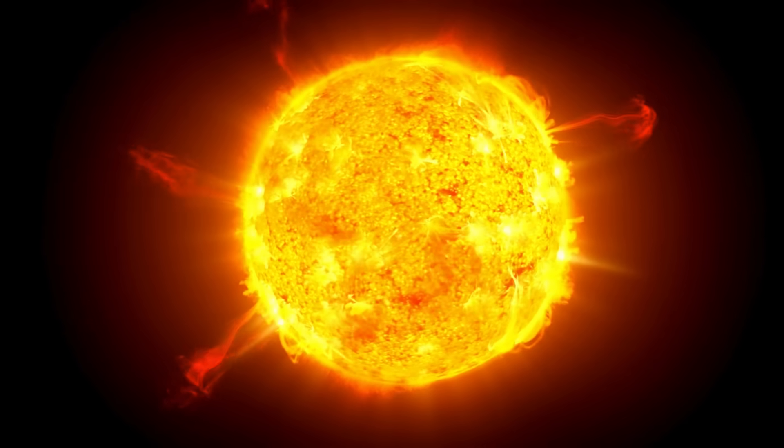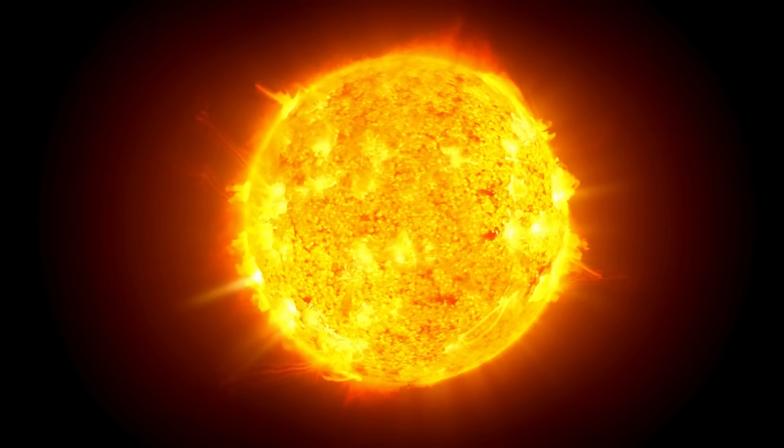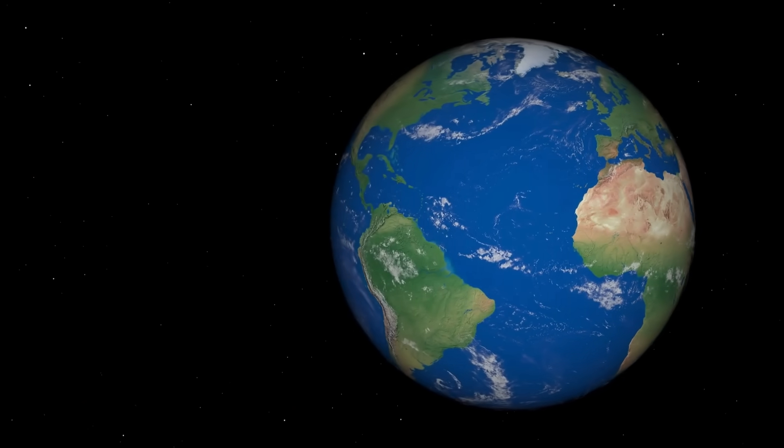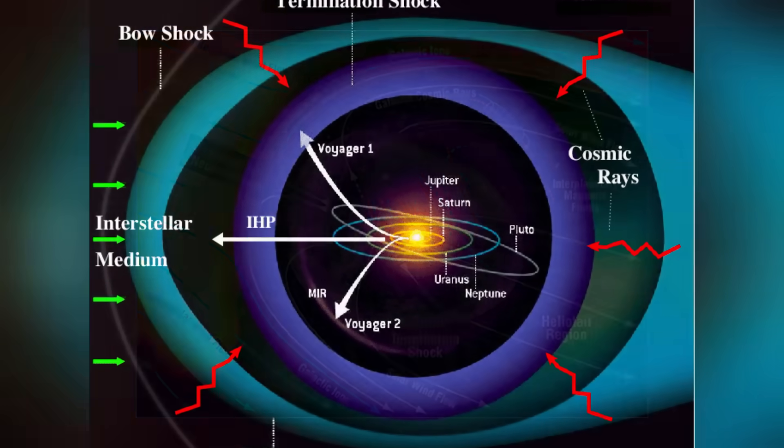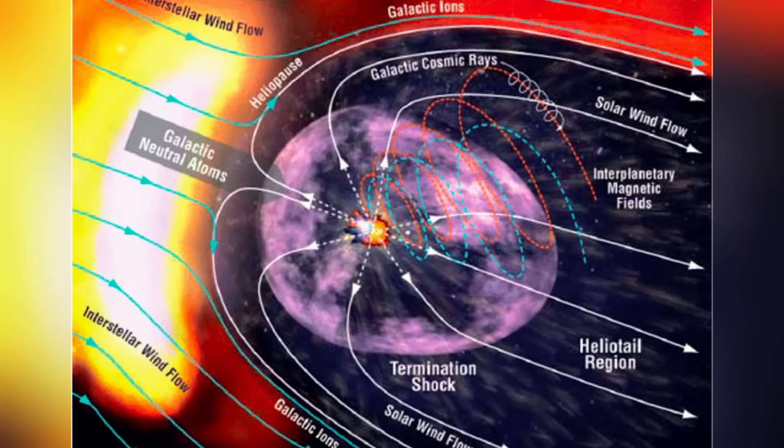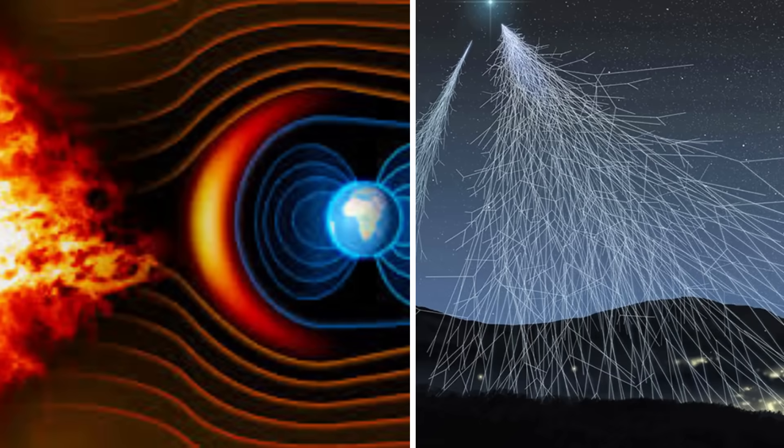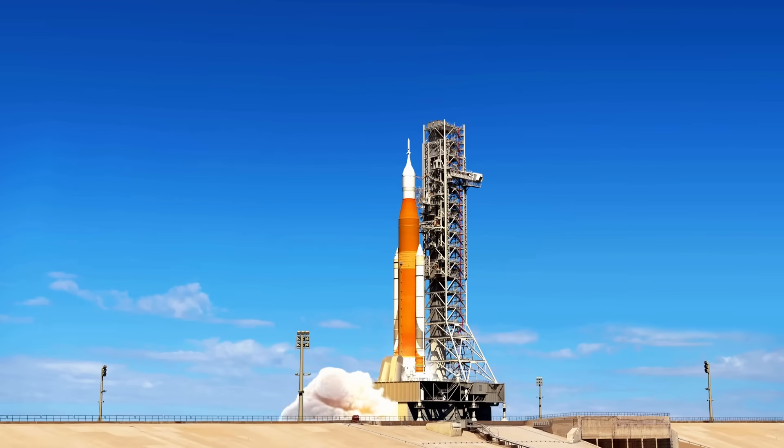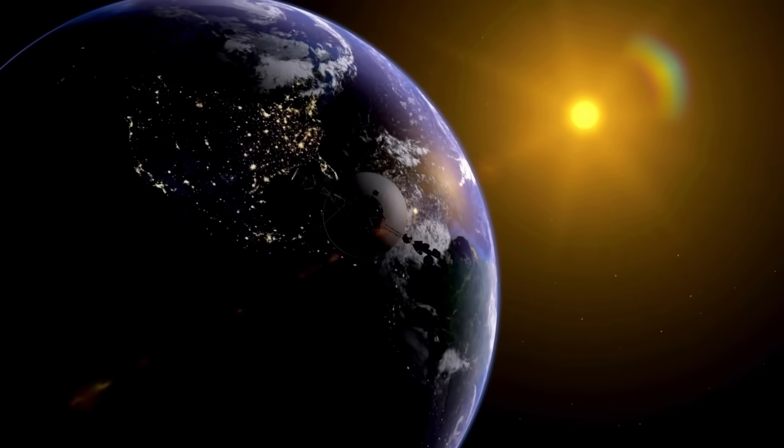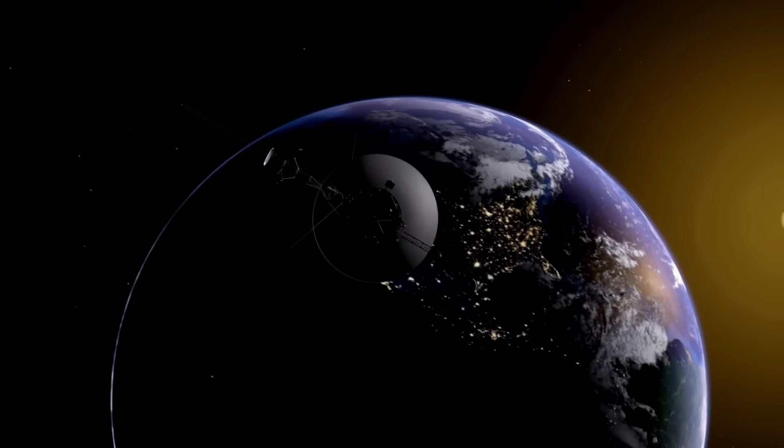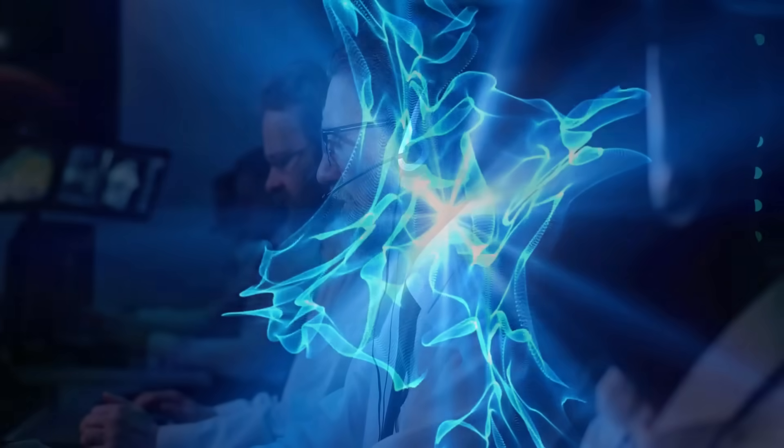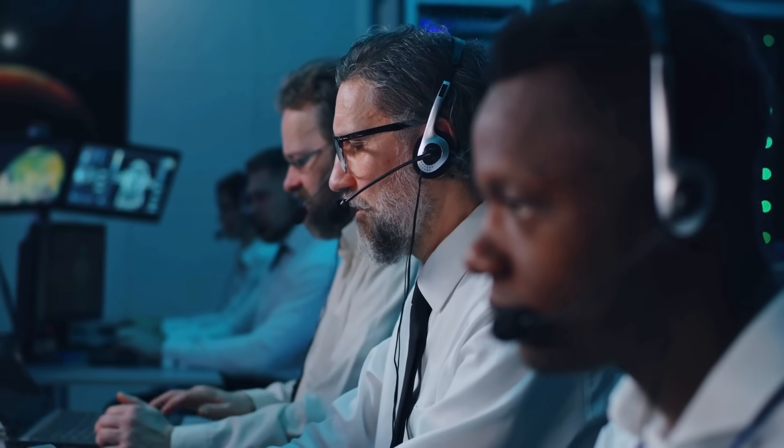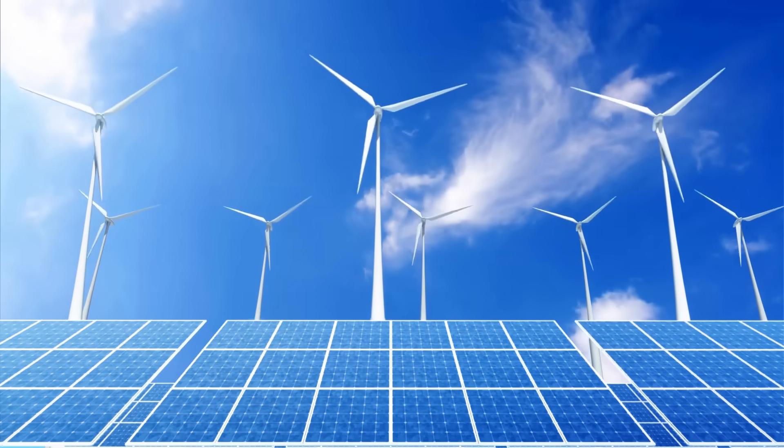In August 2012, Voyager 1 became the first artificial object to enter interstellar space after successfully navigating through the heliopause. Its departure from the heliosphere was confirmed when it noticed a sharp decrease in solar wind particles and an increase in cosmic rays. November 2018 saw the launch of Voyager 2. In contrast to Voyager 1, Voyager 2 was able to detect plasma density directly since its plasma instrument was still operational at the time. Scientists were able to learn more specific details regarding the change from the solar wind to the interstellar medium because of this.